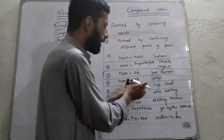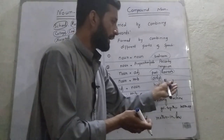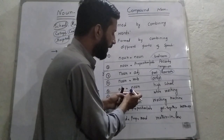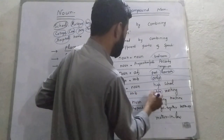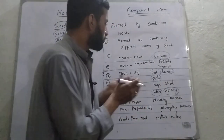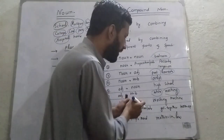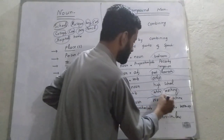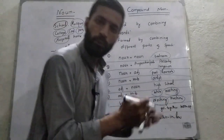The fifth case: whenever adjective and noun are combined they form a compound noun, like 'high school'. The sixth case: whenever adjective and verb are combined they form a compound noun — 'white' is an adjective and 'washing' is a verb, so these two combine to form a compound noun. The seventh case: when verb and noun combine they form a compound noun, like 'washing machine' — washing is a verb and machine is a noun.